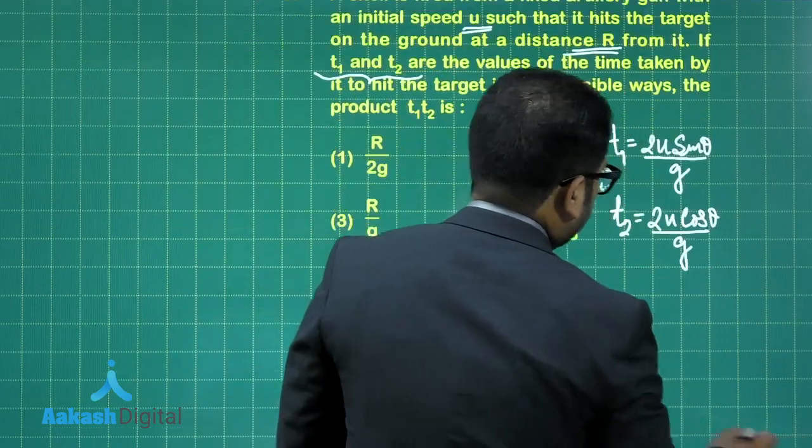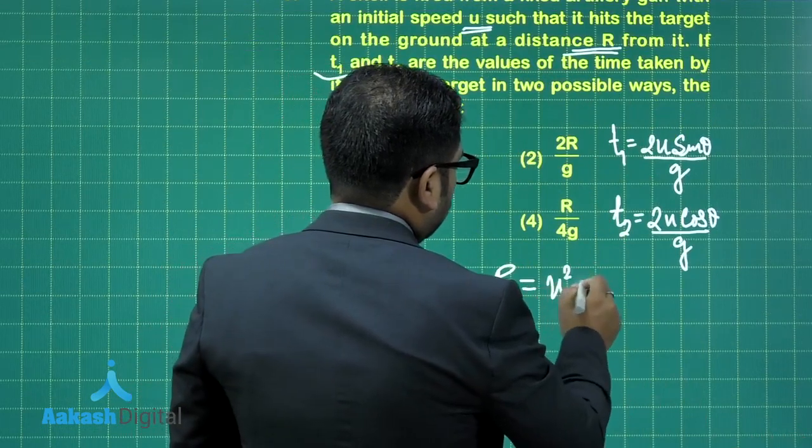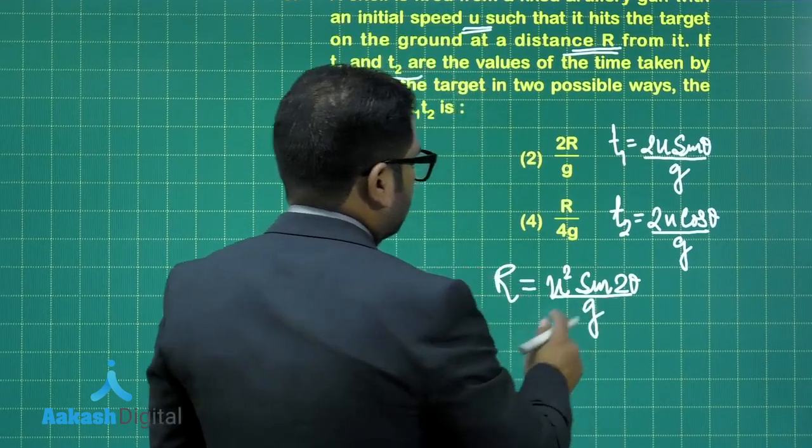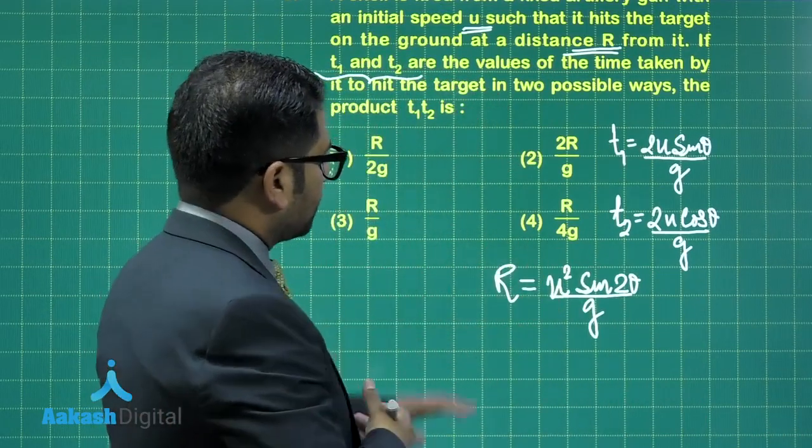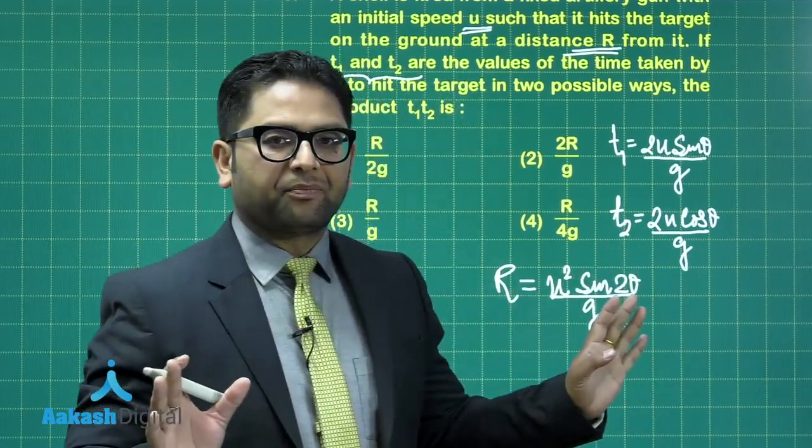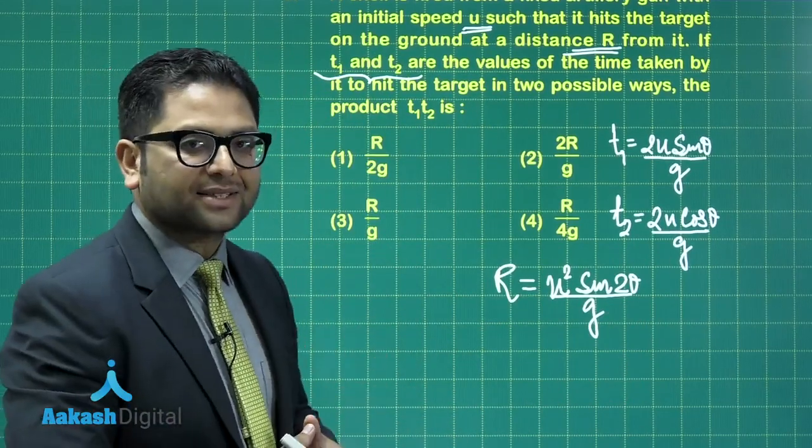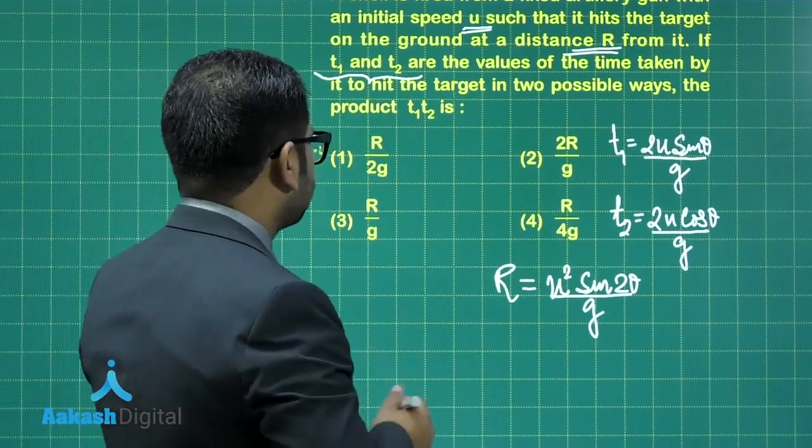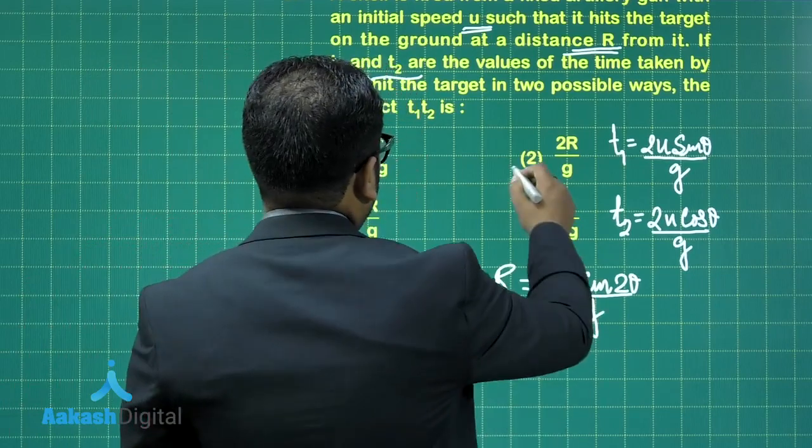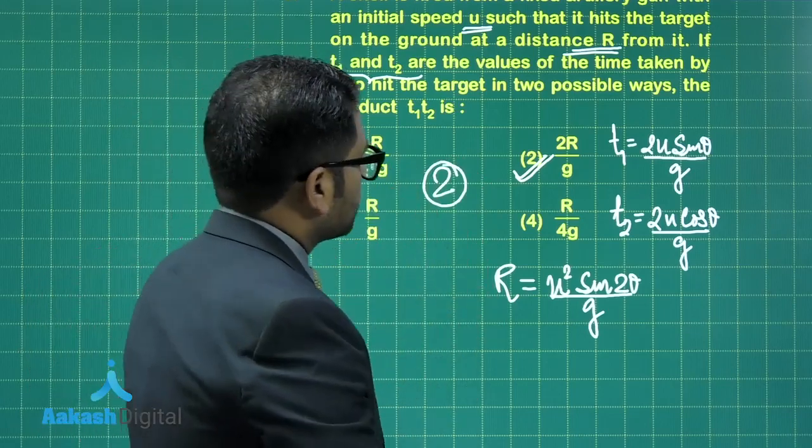And then, after that, what we'll do is that, let's calculate the range. The range would be u square sine 2 theta divided by g. For both theta and 90 minus theta, you have the range. Now it's a simple calculation. You need to find t1, t2 and relate in terms of the range. Well, if you multiply t1 into t2, you're going to get 2r divided by g. Therefore, option number 2 would be the correct option for this question.